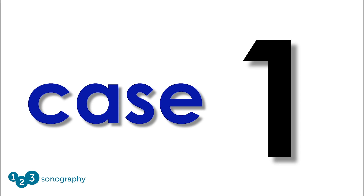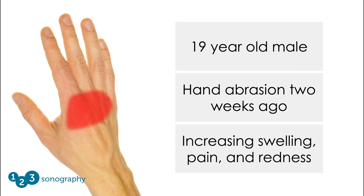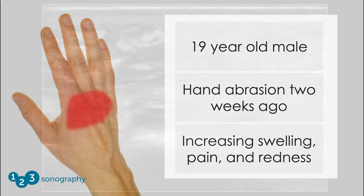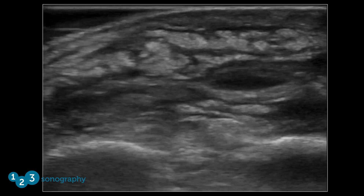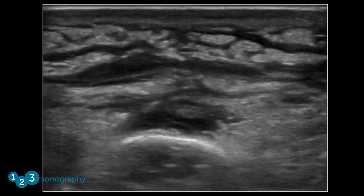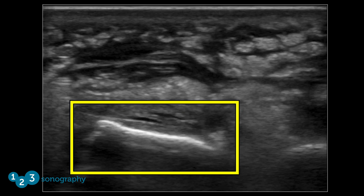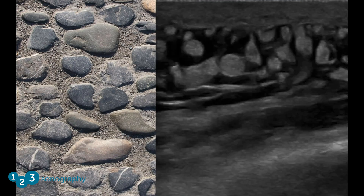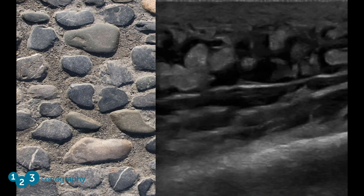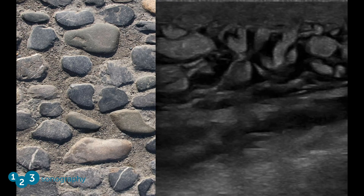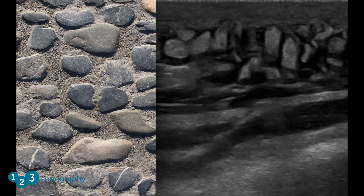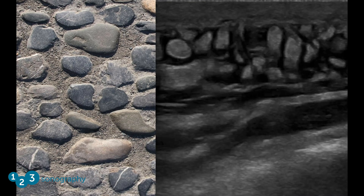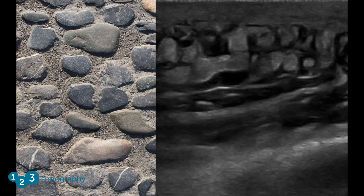Case number one: a 19-year-old male who suffered an abrasion on the dorsum of his hand two weeks prior, now presenting with increasing pain, swelling, and redness at the site. The ultrasound of the area of tenderness shows multiple echogenic structures surrounded by anechoic fluid. At the bottom there is a hyperechoic structure — the metacarpal. The pathologic pattern seen in the soft tissue is referred to as cobblestoning. The stones are areas of subcutaneous fat surrounded by serous fluid, seen in conditions where extravasated fluid collects in the soft tissue. In this case, the fluid is caused by inflammation from cellulitis.